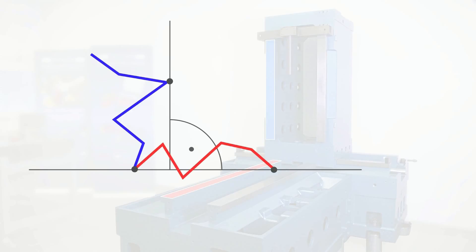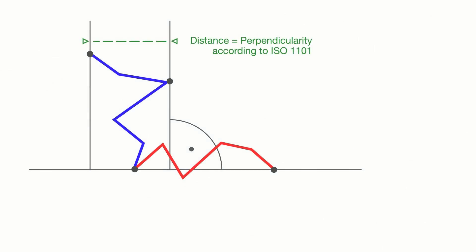Perpendicularity is now defined as the smallest distance of two lines which are perpendicular to the reference line and which accommodate all points on the vertical line.